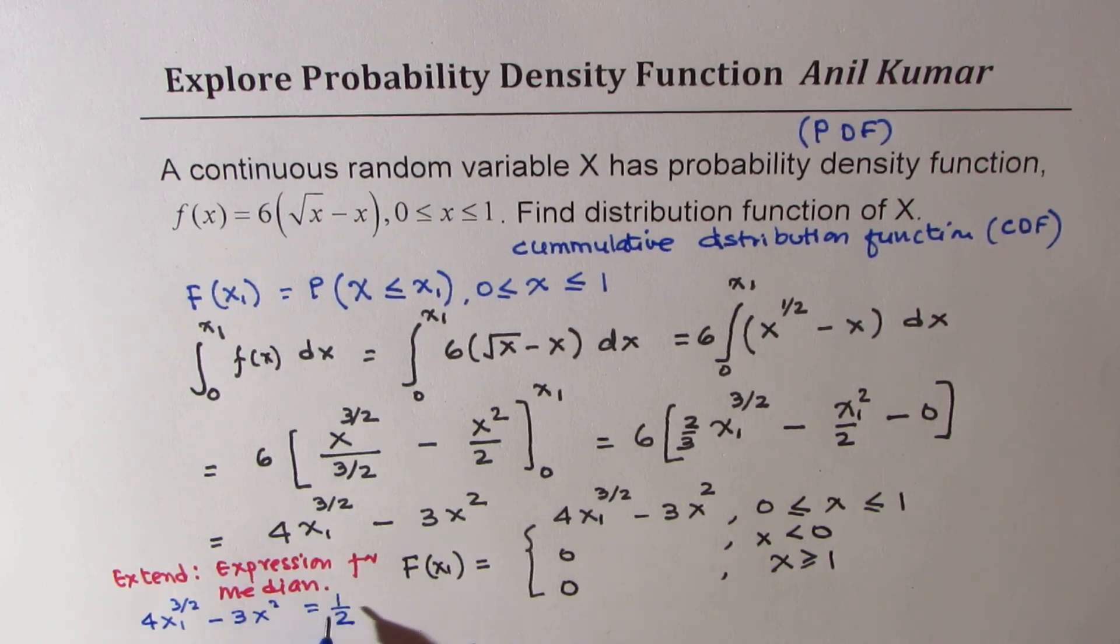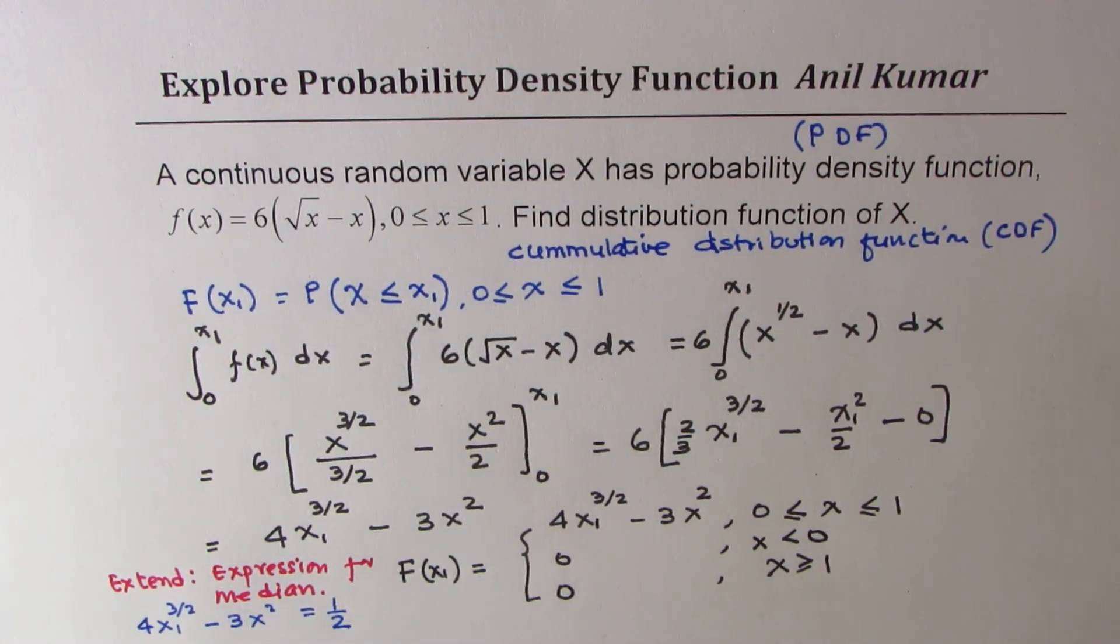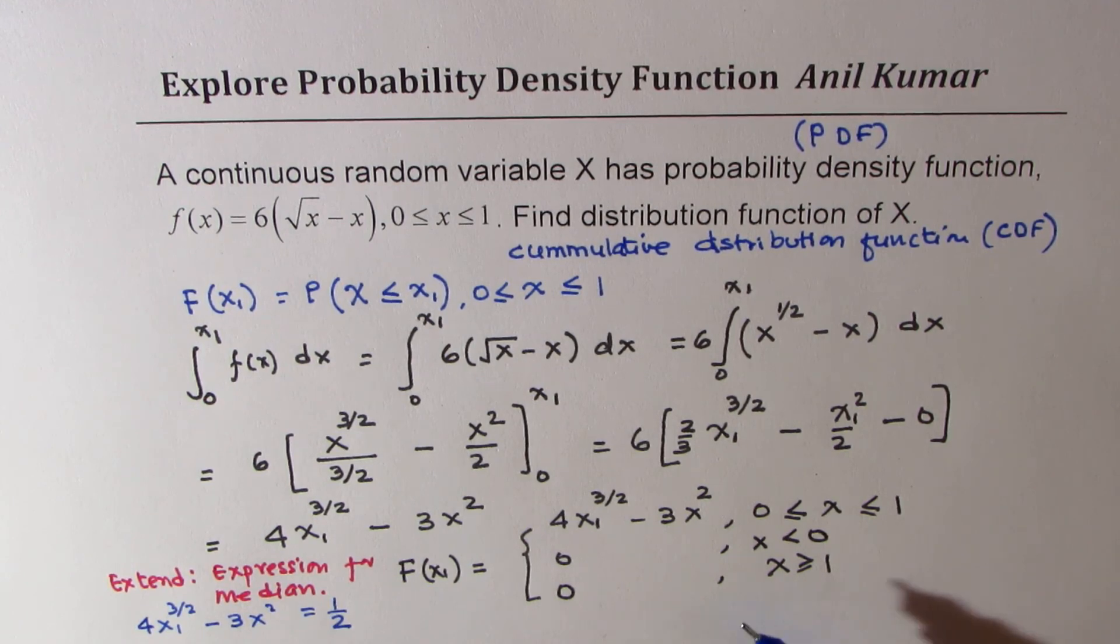I hope you appreciate how you can convert probability distribution function PDF to cumulative distribution function CDF, and how to utilize this method to find expressions for median, for quartiles, and things like that. If you're looking for first quartile, then this value will be 0.25 or 1 over 4.